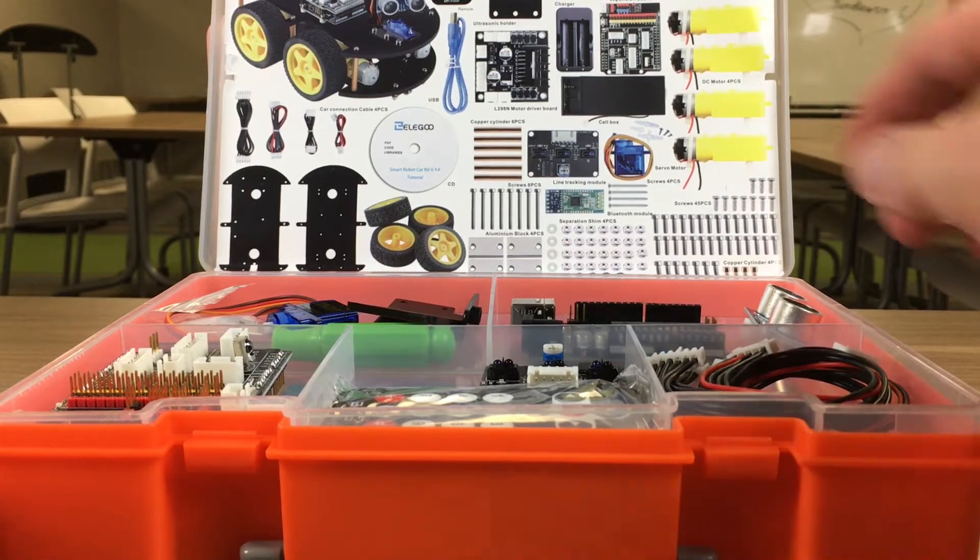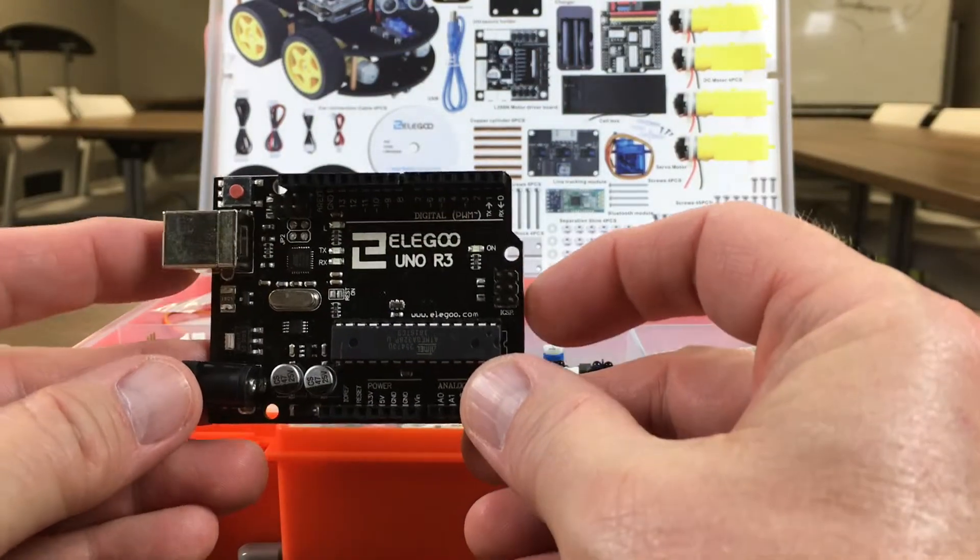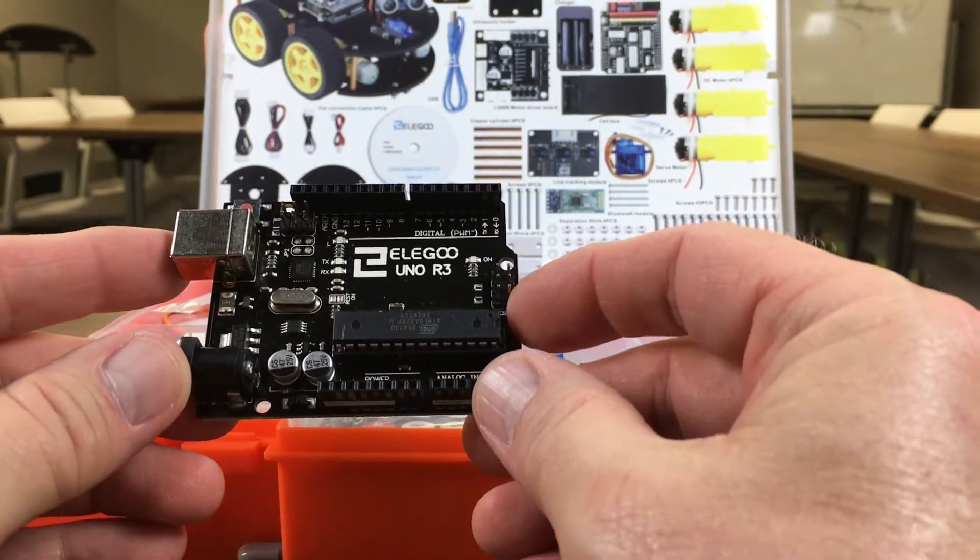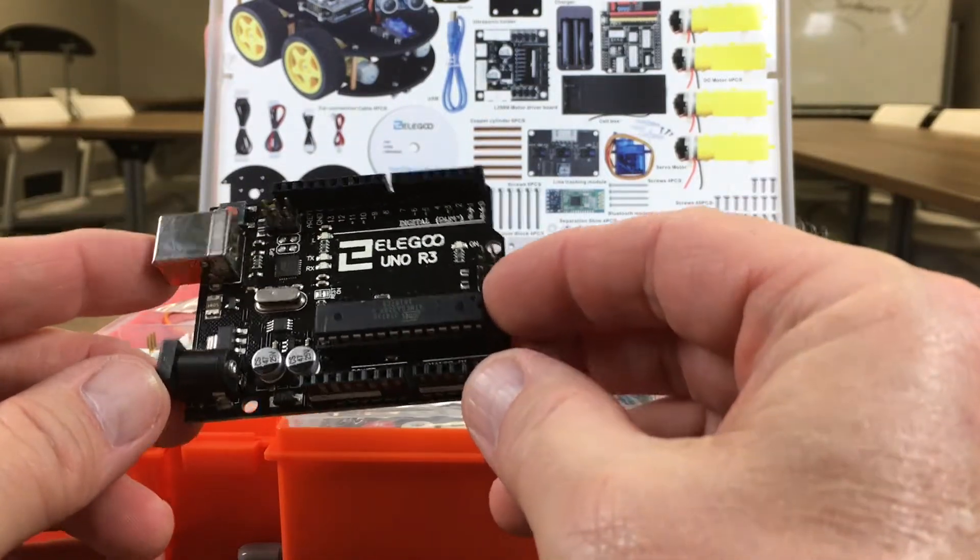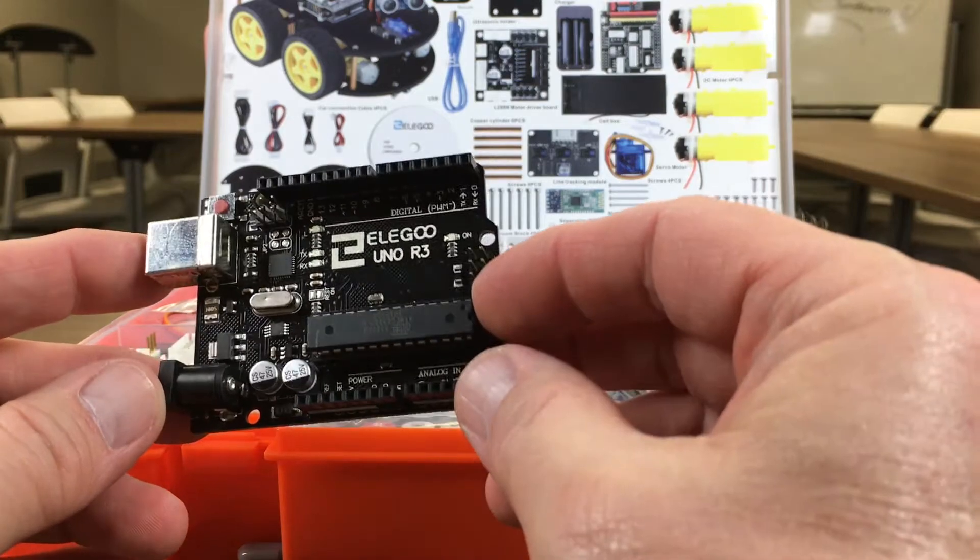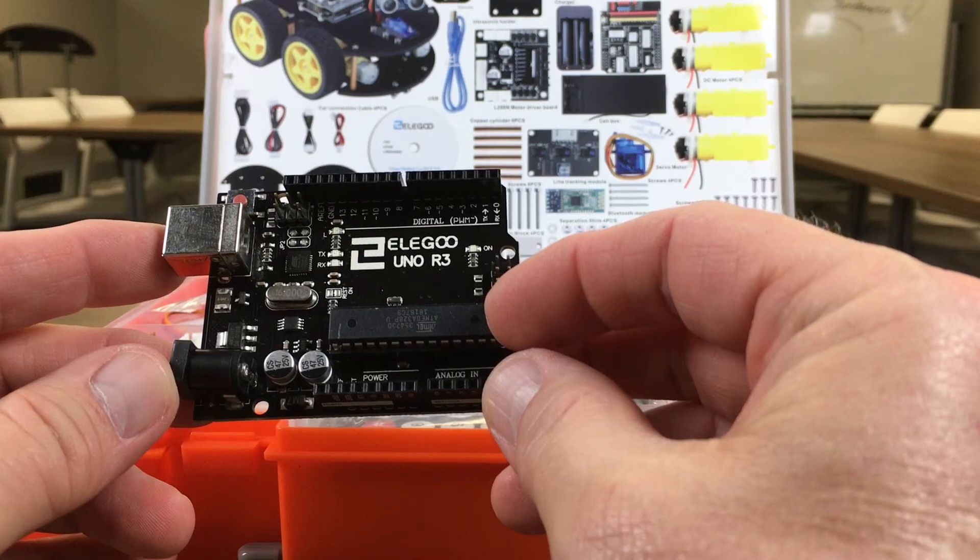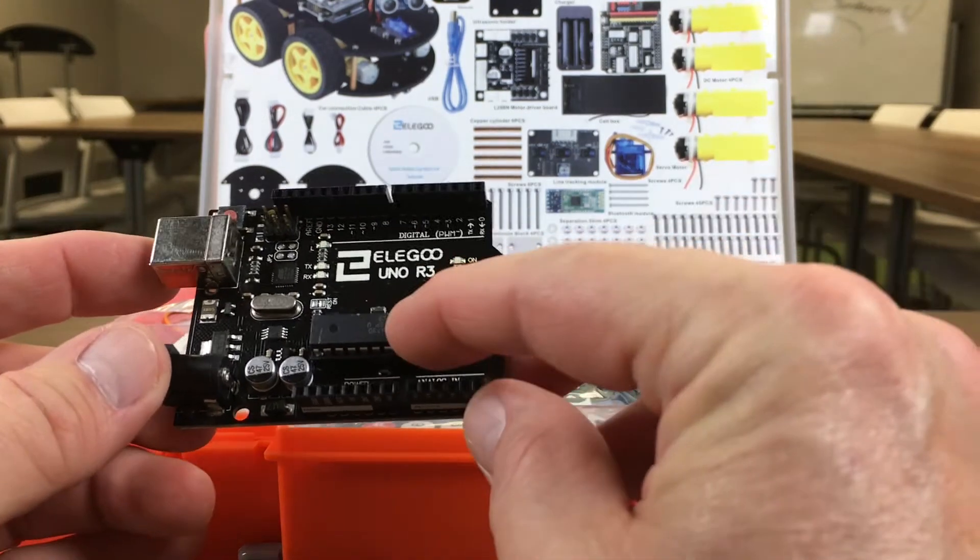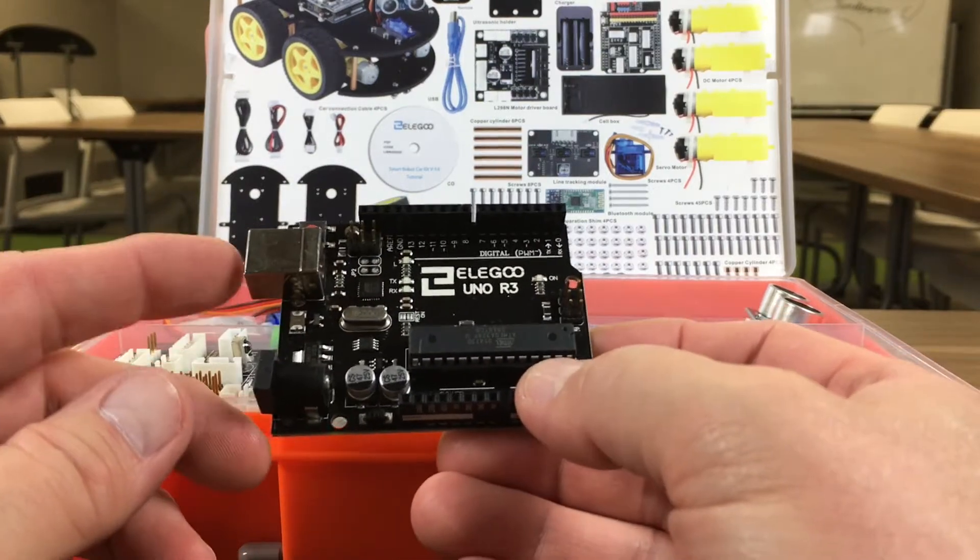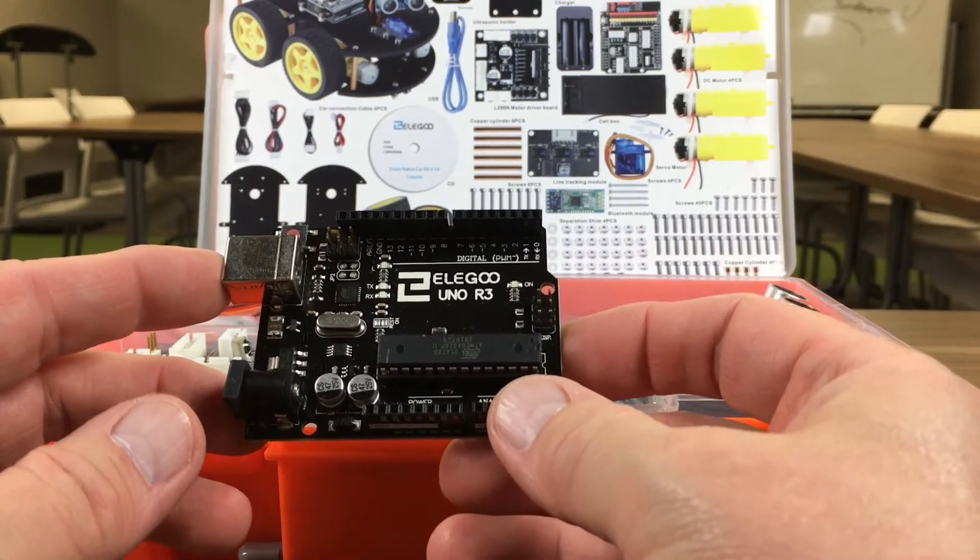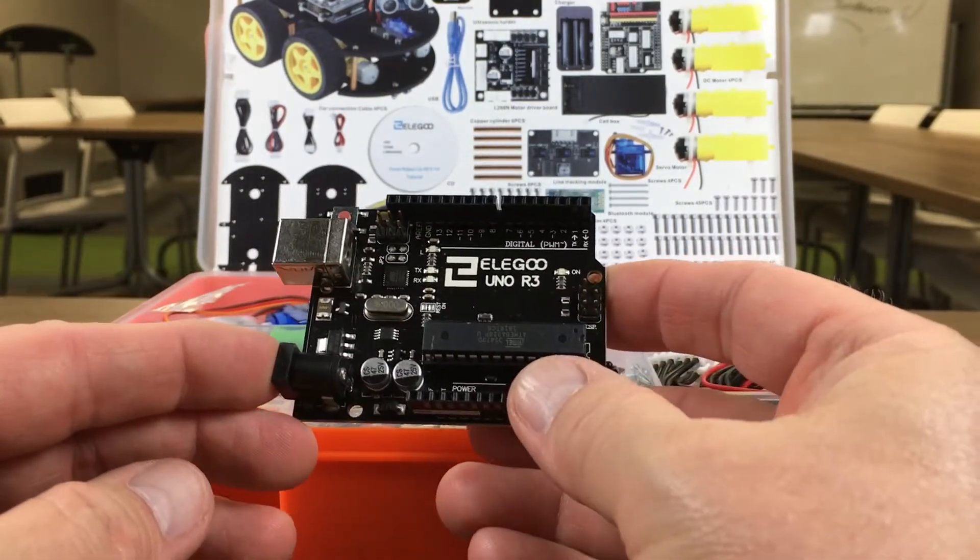The first thing is going to be the heart of the robot car, and it's going to be a UNO R3, an Arduino-compatible microcontroller board with an Atmega 328 chip, USB port there to plug in to program the microcontroller, and power.